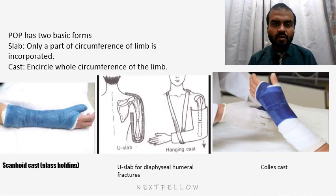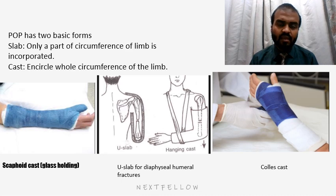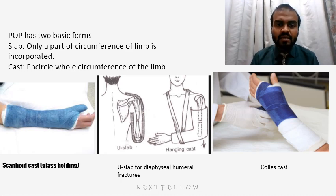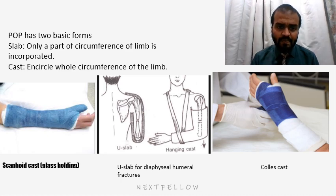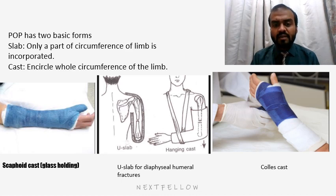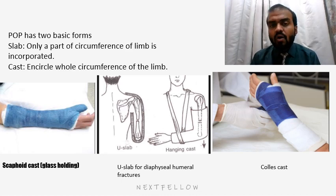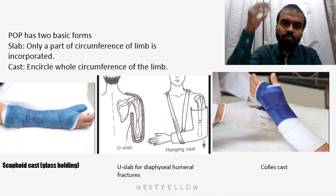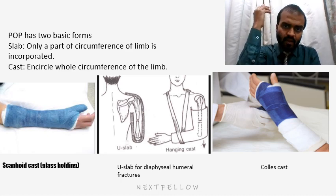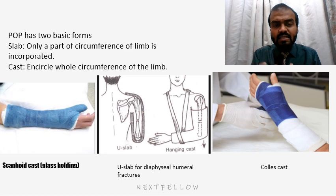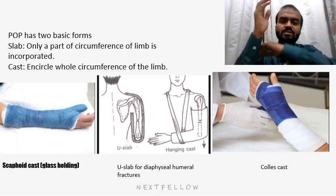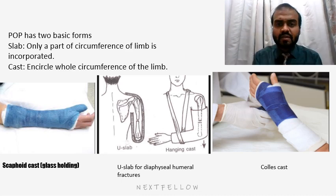There are two basic forms of POP: one is the slab and the other is the cast. A slab is a supportive structure which covers only a part of the circumference of the limb — it incorporates or supports only a part of the limb. A cast is a type of POP which encircles the whole circumference of the limb.